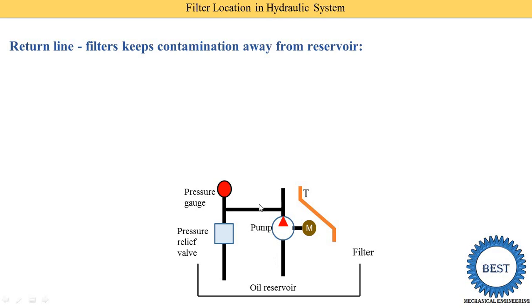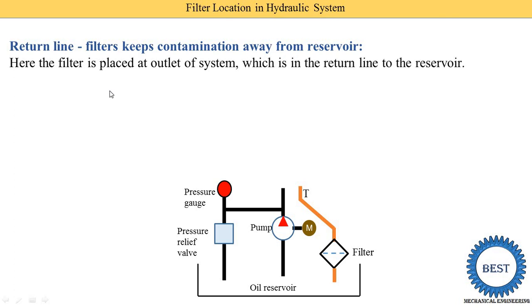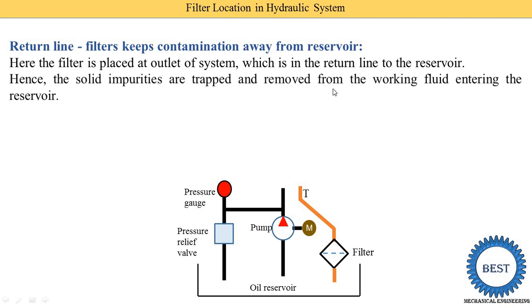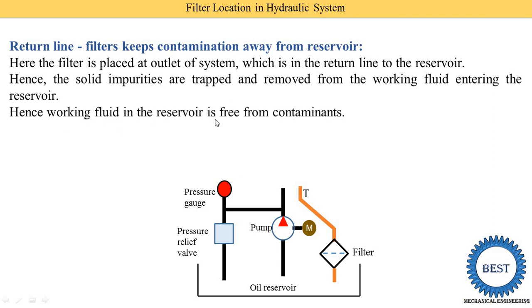Here you can see the oil reservoir, pump, and pressure gauge. The outlet of the pump is connected with a directional control valve and actuators. Oil returned from the actuators comes back into the directional control valve, and from there through a tank port back to the tank. The filter is placed on this return line before the oil reaches the reservoir. Solid impurities are trapped and removed from the working fluid before entering the reservoir, so the working fluid in the reservoir is kept free from contamination.